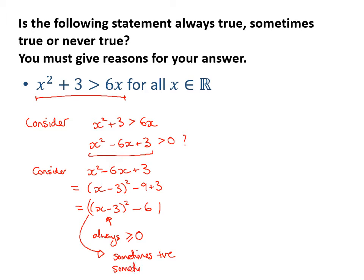So now I can give some examples. So let's have a look at where it is going to be not true. This is not going to be true when x minus 3 squared is less than 6. So we could take, let's say, let x equal 3. And we can evaluate that left-hand side and right-hand side. We'll get 3 squared plus 3 equals 12. And 6 times 3 equals 18. 12 is greater than 18 is not true.